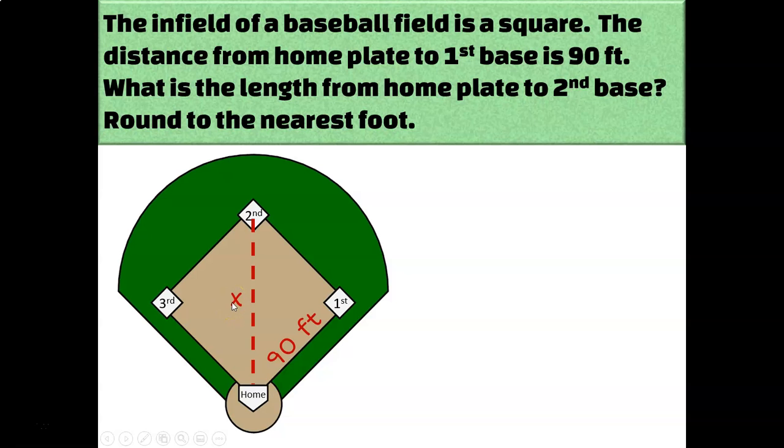X would be the hypotenuse of that 45-45-90 triangle, and 90 would be one of the legs. So I can write this proportion to figure out the length of the hypotenuse. 1 over 90. 1 is the length of the leg in the base proportion for solving 45-45-90 triangles, and 90 is the length of one of the legs in this triangle. Square root of 2 represents the hypotenuse in the base proportion for solving a 45-45-90 triangle, and X is the length of the hypotenuse in this diagram. So I'll just cross-multiply and solve, and I find out that X equals 90 times the square root of 2.